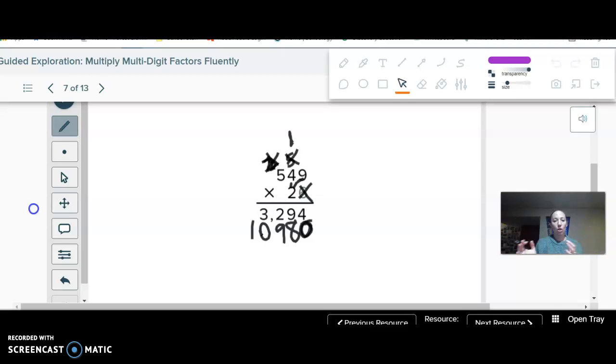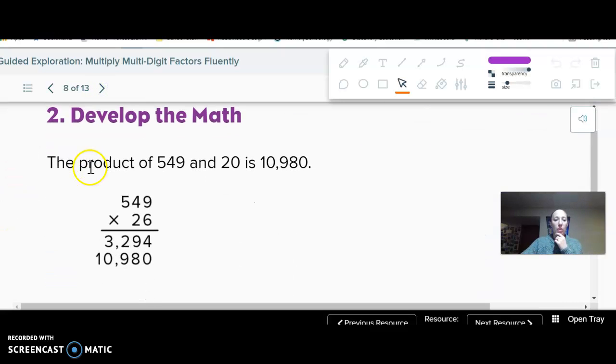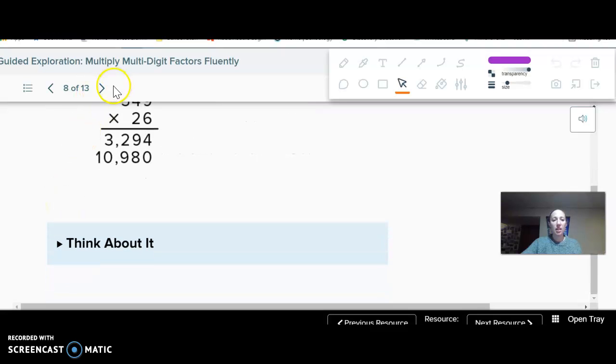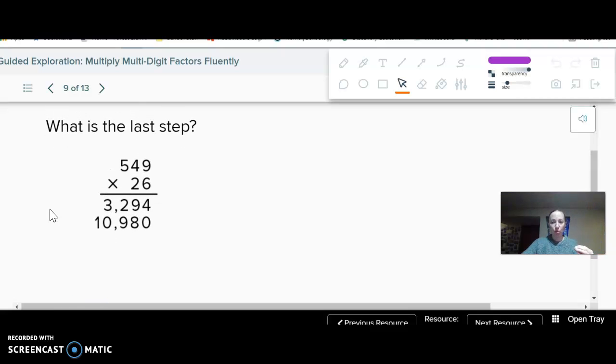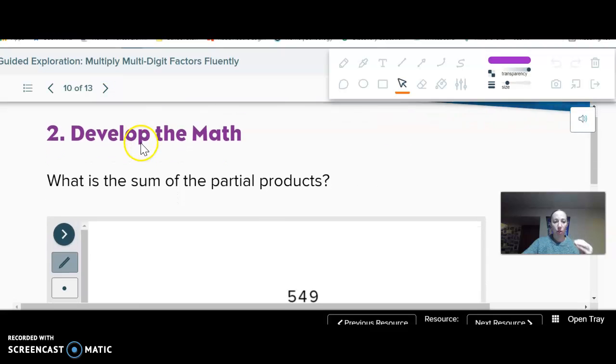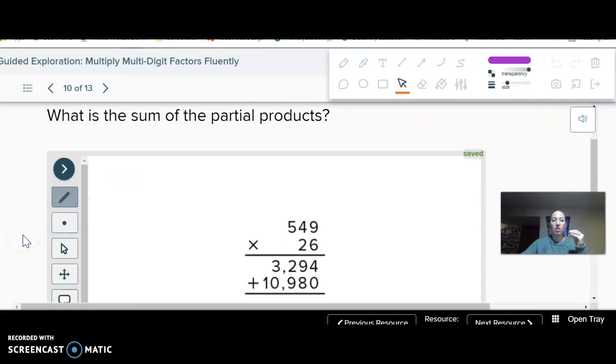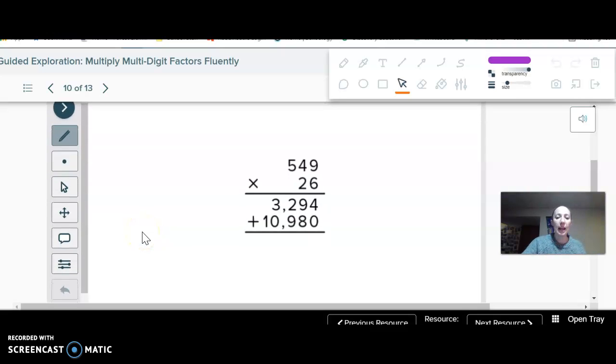So I get that second row which was everything times 20. Once I have 10,980 in my second row, my last step is to add those two together to get my final product because each of those are a partial product. They're part of the answer. So once I add them, just like normal, four plus zero is four. Nine plus eight is 17. Two plus nine is 11, plus one is 12. Four and then one.